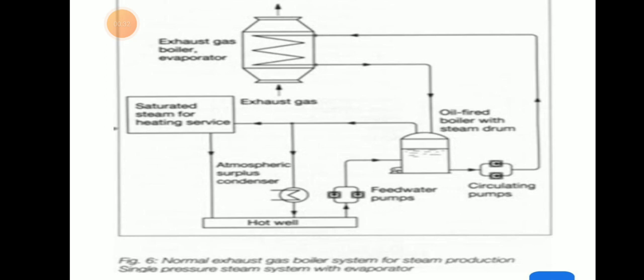In the exhaust gas boiler system, there will be an evaporator, feed water pump, circulating pump, and hot well — that means an expansion tank. Here is a picture of a normal exhaust gas boiler for steam production of a single pressure steam system with evaporator.